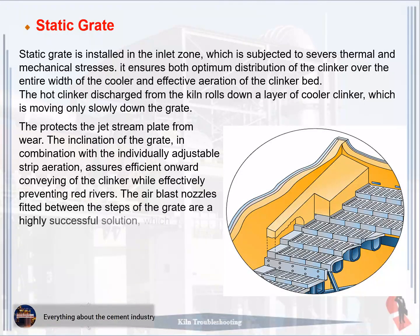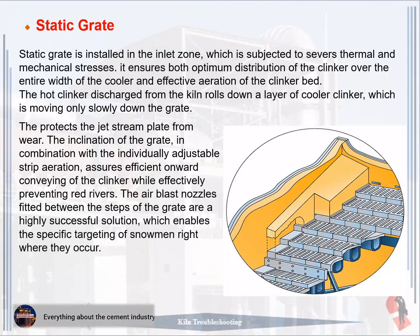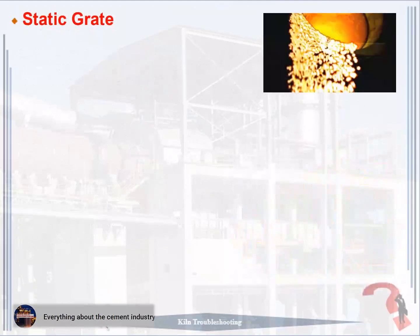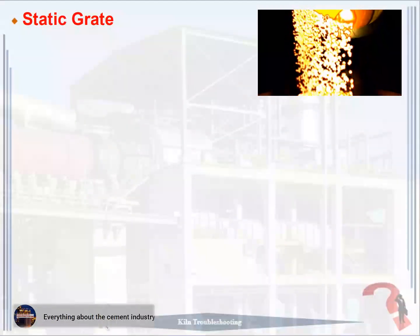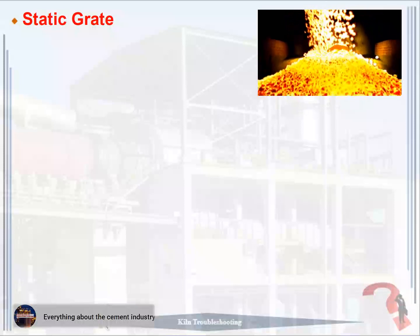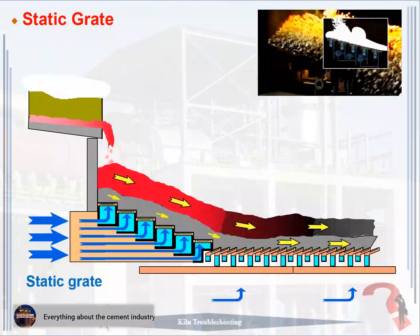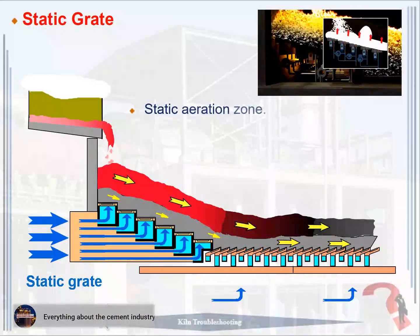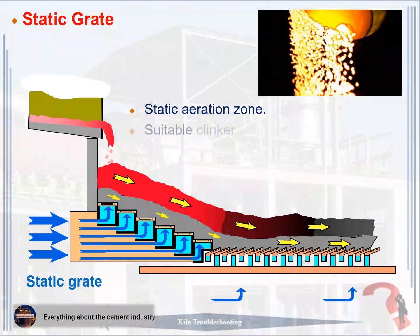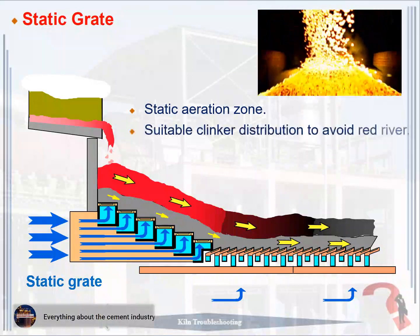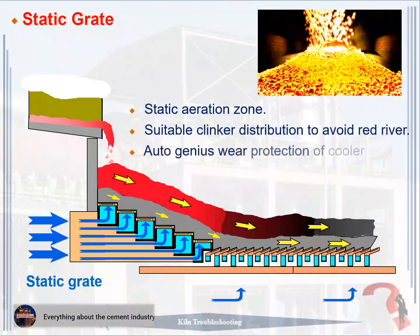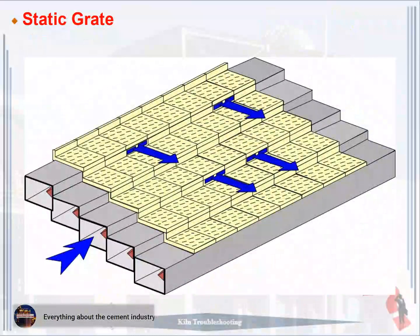The air blast nozzles fitted between the steps of the grate are a highly successful solution which enables the specific targeting of snowmen right where they occur. This animation shows the movement of air with the clinker at the inlet of the cooler on the static grate. The most important functions of the static grate are: one, static aeration zone; two, suitable clinker distribution to avoid red river; three, autogenous wear protection of the cooler inlet. This picture shows the static grate and air blast nozzles.